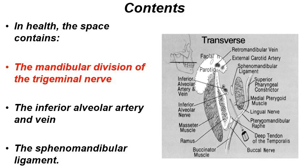The contents of the pterygomandibular space are very important and relevant to dental practitioners. We have the mandibular division of the trigeminal nerve with its two most important branches — the inferior alveolar and the lingual nerve — the inferior alveolar artery and vein, and the sphenomandibular ligament. A diagram shows the needle which penetrates this space during the inferior alveolar nerve block, which accounts for around 50% of our practice. We penetrate the buccinator muscle and go through this space with our needle every day in clinical practice.